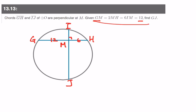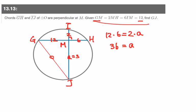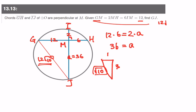Now we can figure out MJ and GH. We get the relationship 12 times 6 equals 2 times A, then A must equal 36. Knowing that, the relationship is 12 and 36, which is a 1 to 3 ratio. So 1, 3, and radical 10 becomes the hypotenuse. Therefore GJ must be equal to 12 times radical 10, which is our final answer.